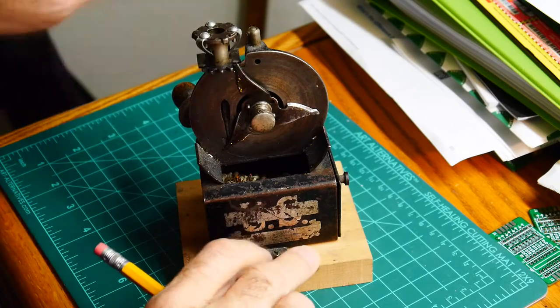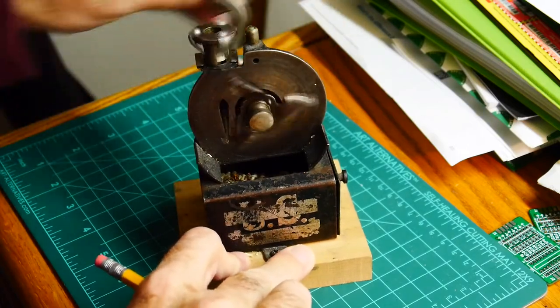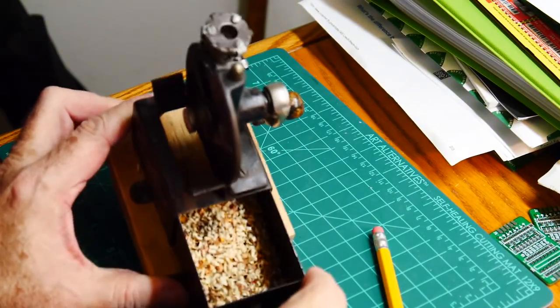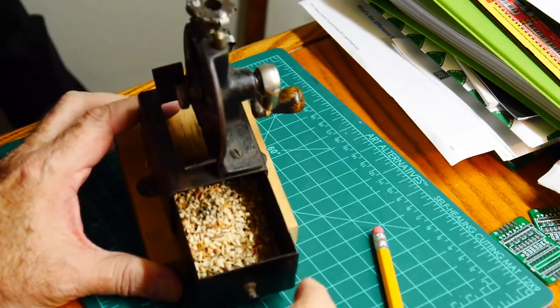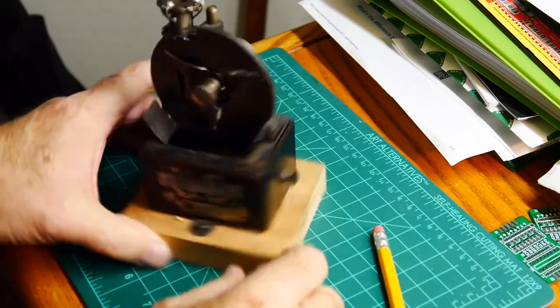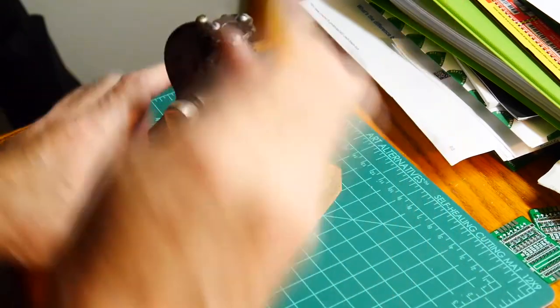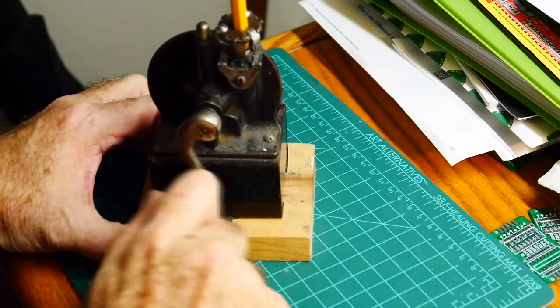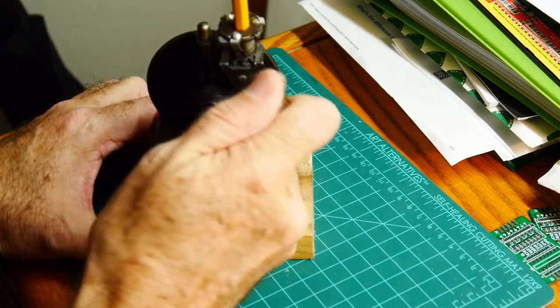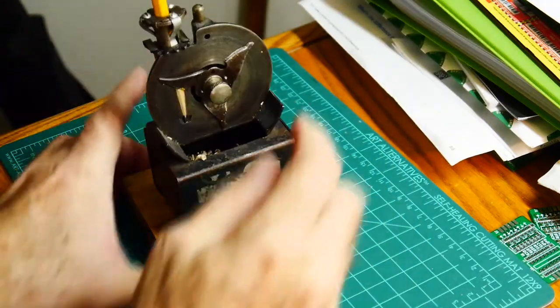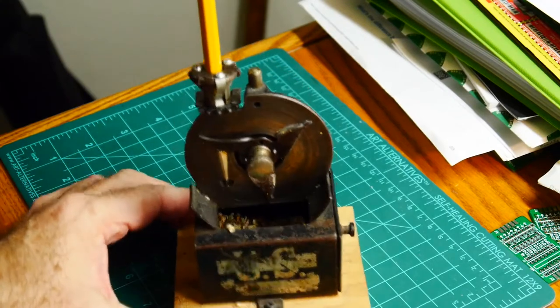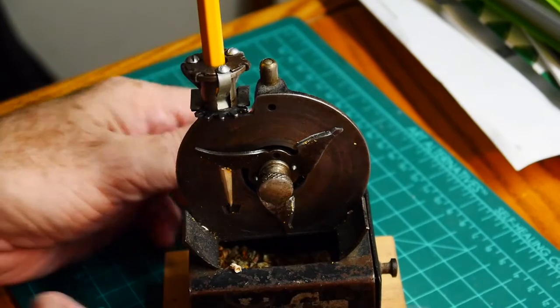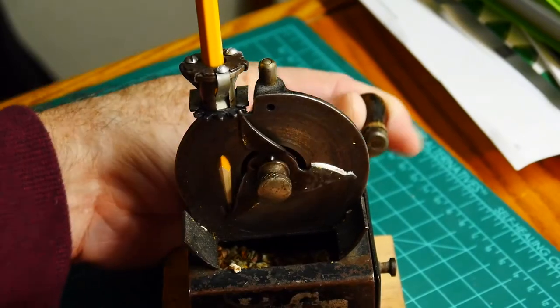The way it works is it has some little blades that revolve around, and it has a little drawer to catch the shavings, and it has a place to put the pencil in and a crank. As we crank you can see it indexes the pencil.